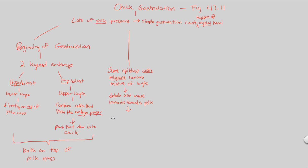This migration towards the yolk is in an attempt to form a new structure called the primitive streak. The epiblast cells — from the area containing the cells that eventually become the actual chick, the embryo proper cells — are forming the primitive streak. The primitive streak will be what is considered the thickened area of this developing embryo as a result of this process.